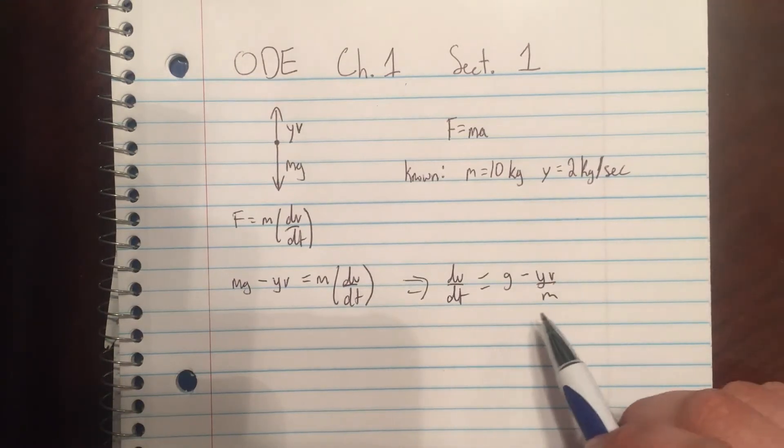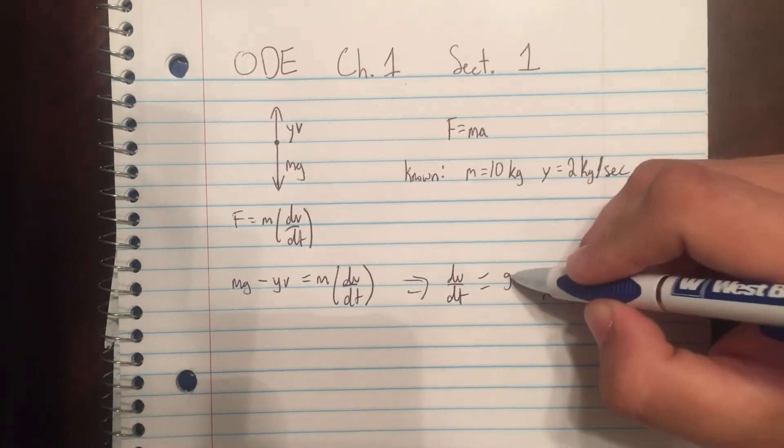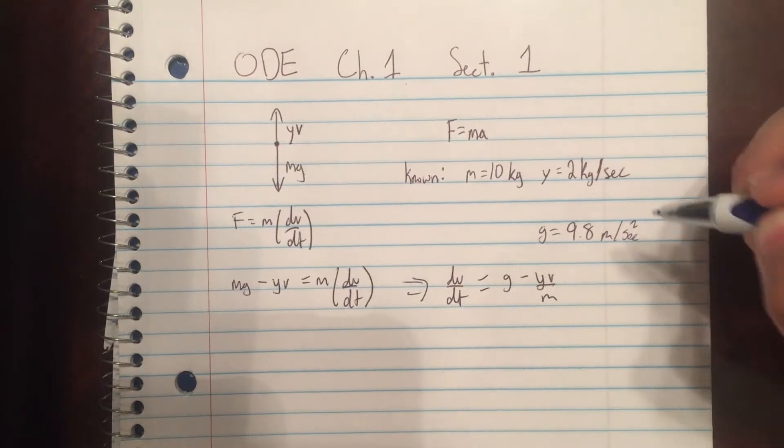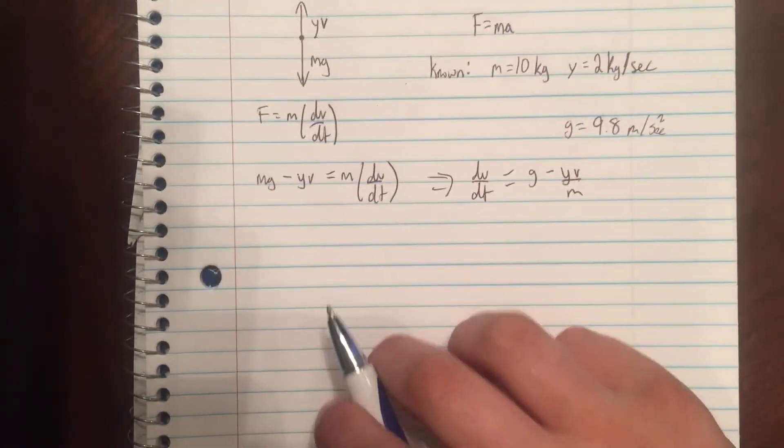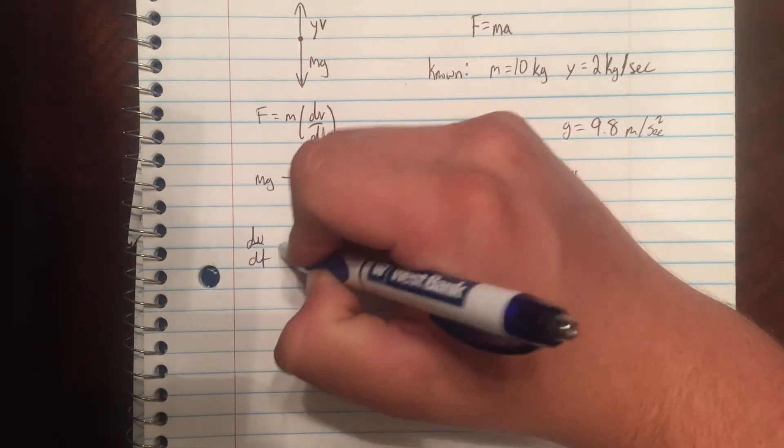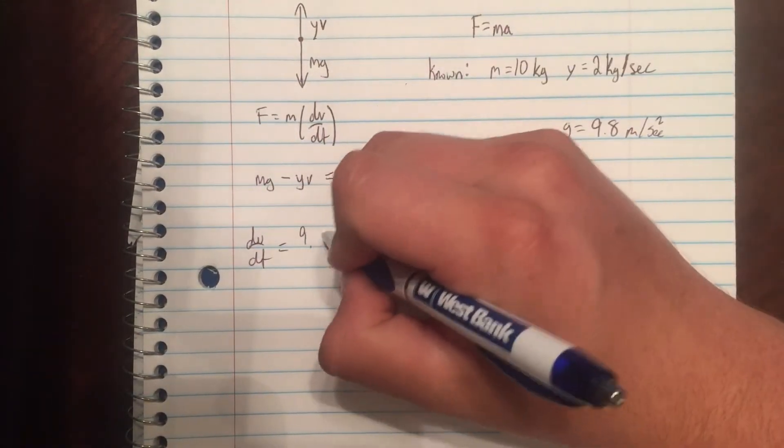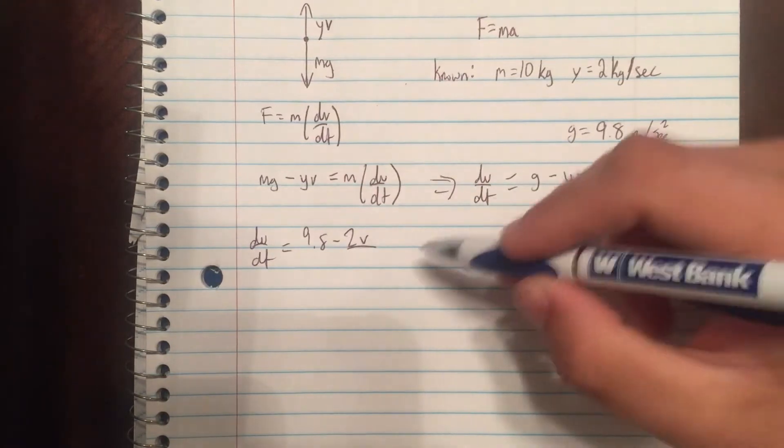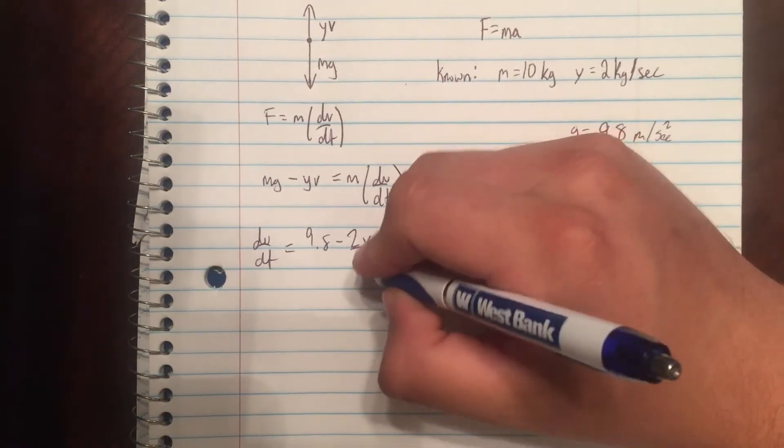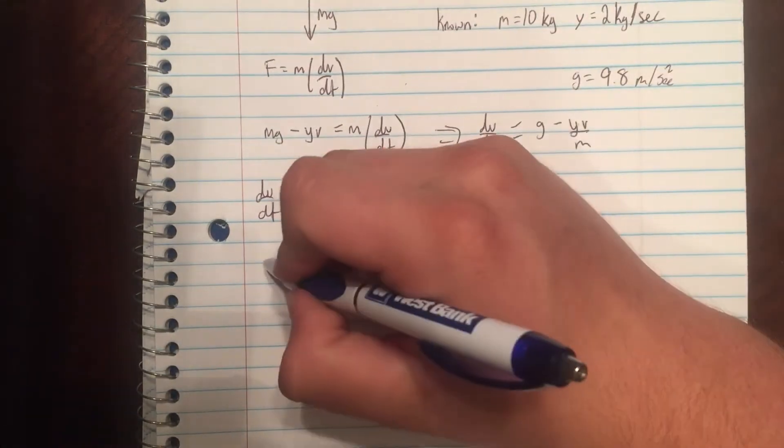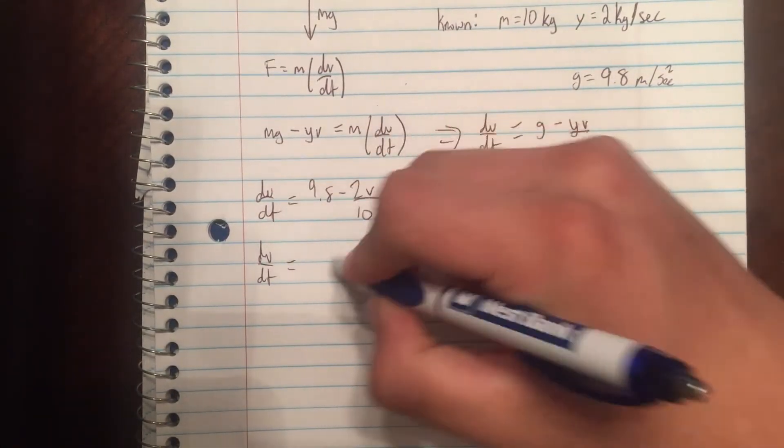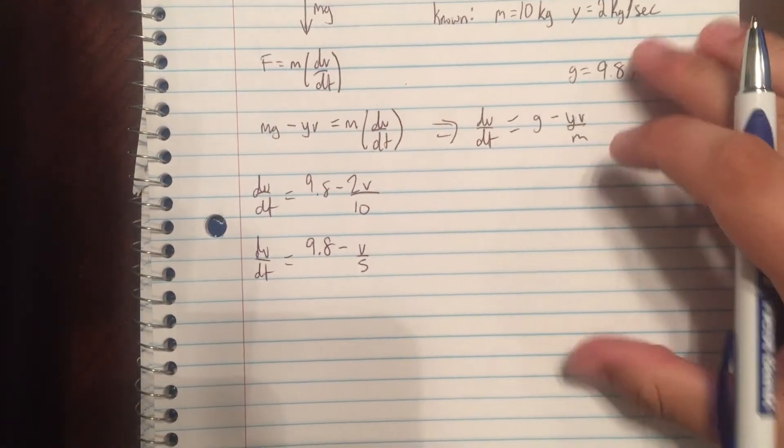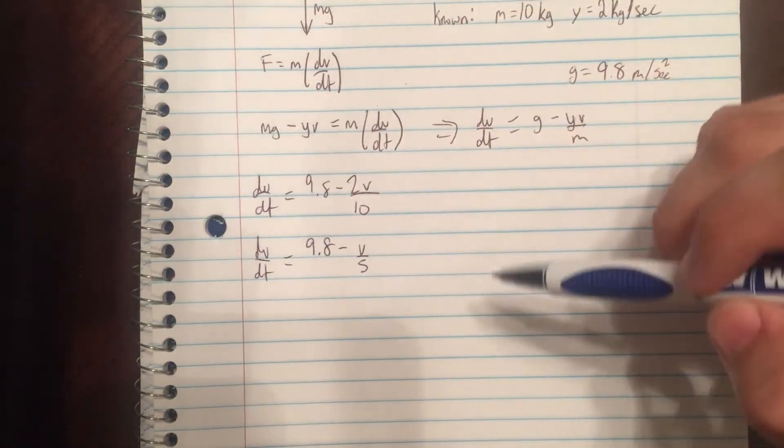We'll actually plug these in. g is 9.8 meters per second squared. So dv dt is going to be equal to 9.8 minus 2v over 10. We'll simplify this: dv dt equals 9.8 minus v over 5. So this is our differential equation that we're trying to solve.